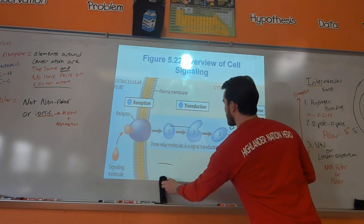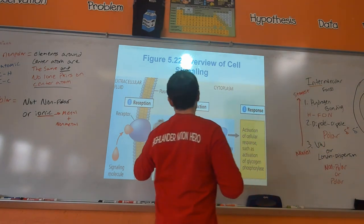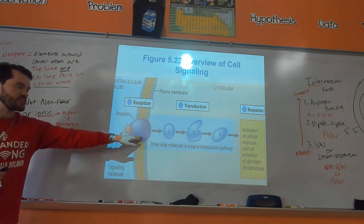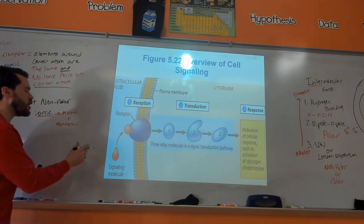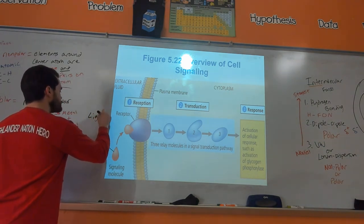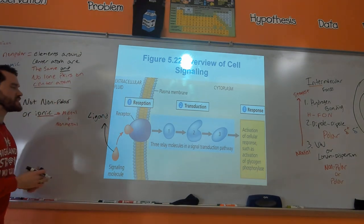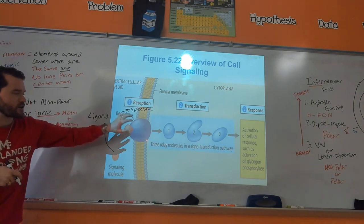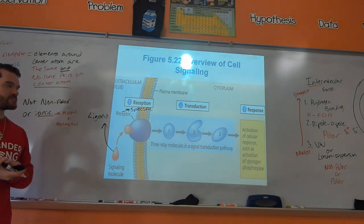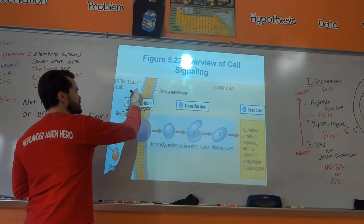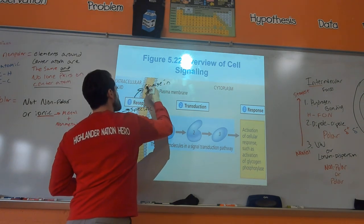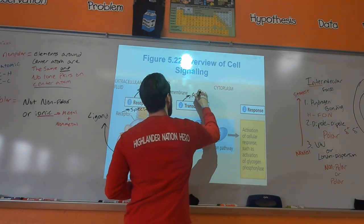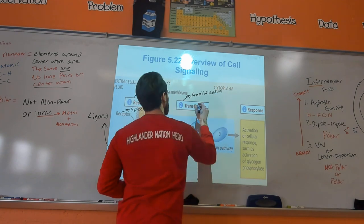There are three parts of every cell signaling pathway. The first is reception — a signaling molecule, called a ligand, binds to its specific receptor like a key fits one lock. Once reception occurs, you get a change in conformation — a change in shape — of that receptor protein. That leads to a signal transduction pathway, whose purpose is amplification and transmission.